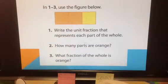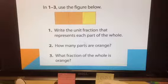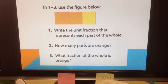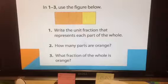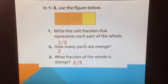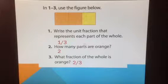In this problem, we wrote the unit fraction that represents each part of the whole — we started with one on top, then thought about how many parts the rectangle had been broken into. How many parts are orange? Two. What fraction of the whole is orange? We put two on top of the fraction because there are two orange parts, and three on the bottom because there are three total — two-thirds. Write the unit fraction that represents each part of the whole: one-third. How many parts are orange? Two. What fraction of the whole is orange? Two-thirds.